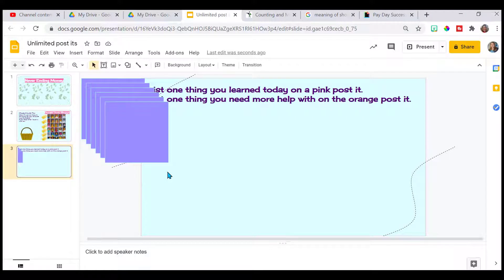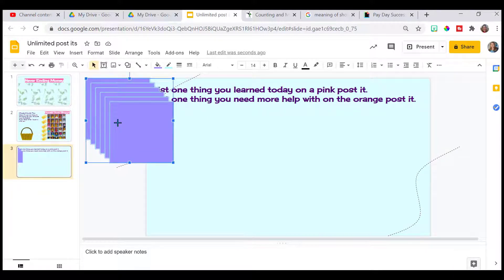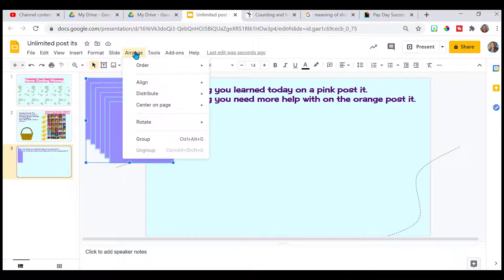Same thing. Control D. Made many copies. I've got five, I think, there. I like my post-its. Arrange. Align left. Arrange. Align top.